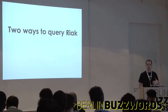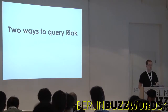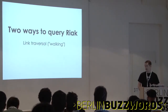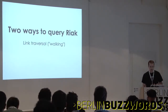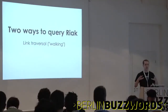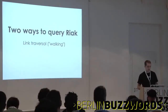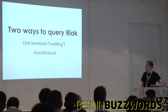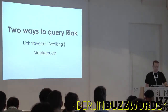That's the basic overview. There are two ways to query Riak. Today I'm not going to talk about link traversal — I'll touch on it in the context of MapReduce. The main primary way to query Riak, other than key-value, is MapReduce.